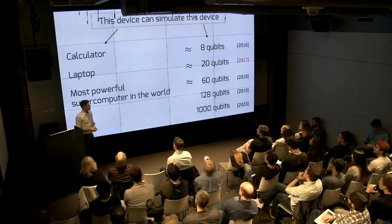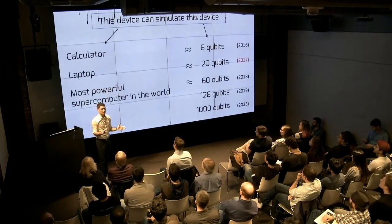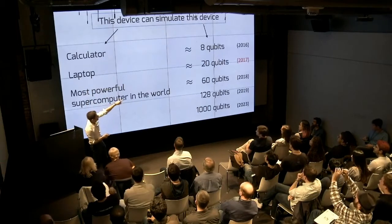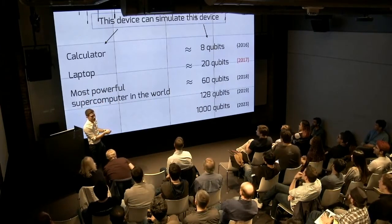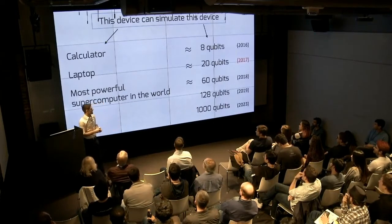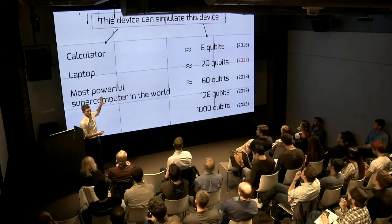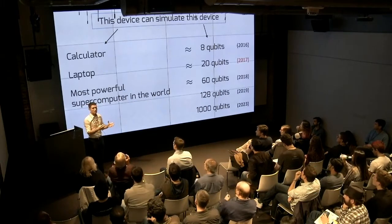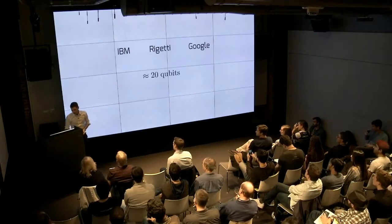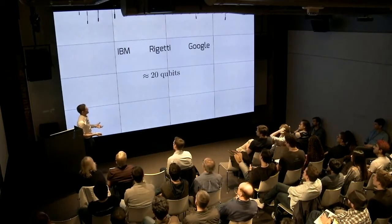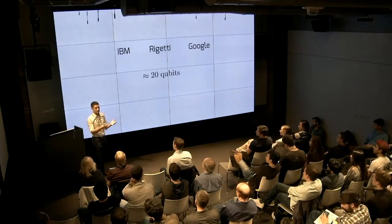So where are we now? This is the state of the art. A calculator can simulate an 8-qubit device. A laptop can simulate a quantum computer with 20 qubits. The most powerful supercomputer in the world can simulate a 60-qubit device, and that will probably happen next year. But in 2019, I hope we'll get 120 qubits, and probably in 2023, 1000 qubits. Currently our quantum computers are not as powerful as the most powerful classical computer, but we're getting there. The three big players right now are IBM, Rigetti, and Google — companies that have published scientific work showing more than five qubits.